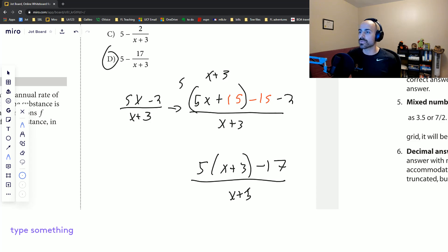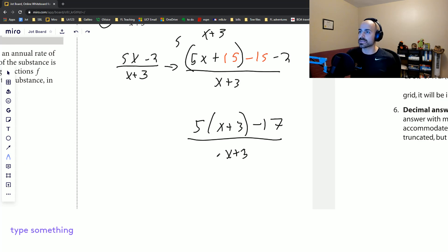Is that we can rewrite this binomial, these two terms separated by subtraction as their own set of fractions over X plus three minus, and then that becomes seventeen also over X plus three. But then these cancel out and you're just left with five minus seventeen over X plus three, which gives us D.